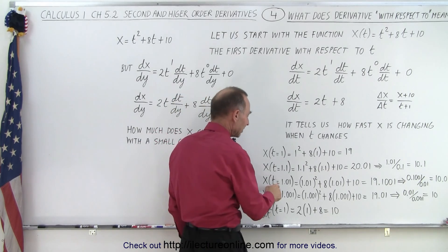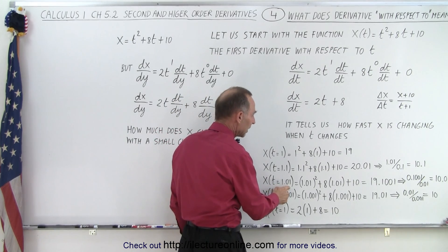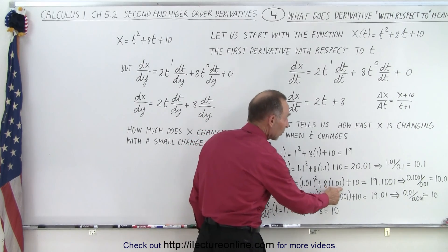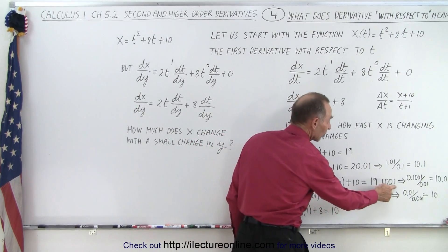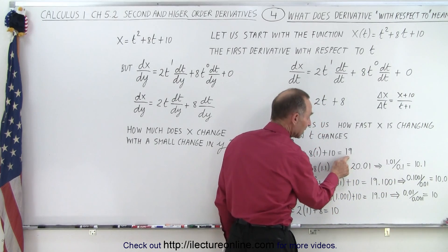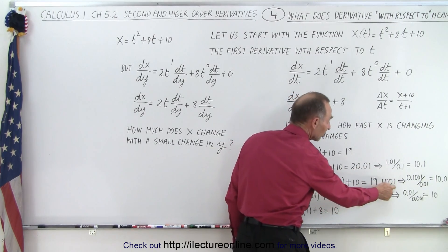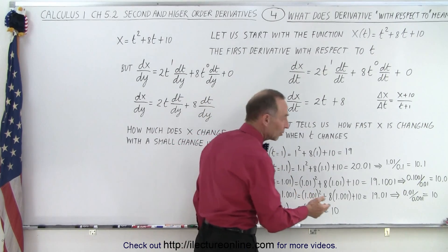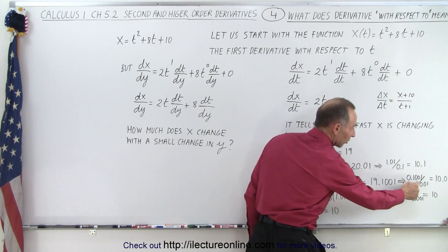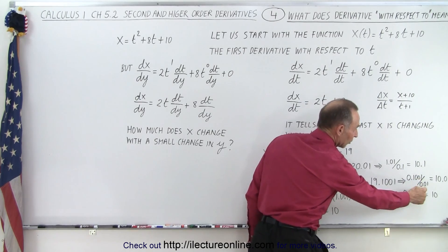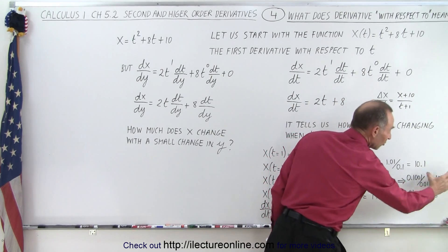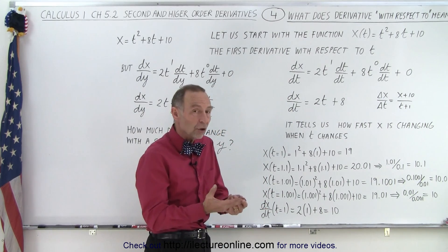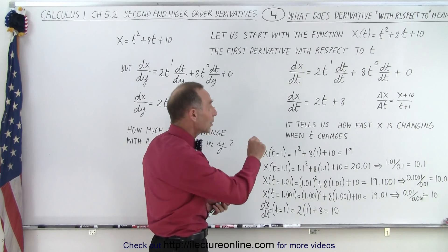Let's get closer. Let t equal 1.01 — the function becomes 19.1001. So it changed from 19 to 19.1001 when t changed from 1 to 1.01. Taking that ratio, x changed by 0.1001 and t changed by 0.01, giving us 10.01 — a close approximation to the derivative. How fast does x change when t changes at t equals 1?